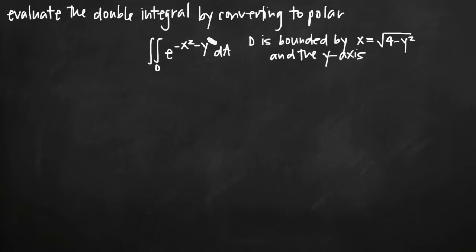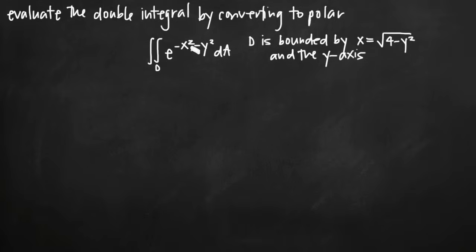The first is the function itself, e to the negative x squared minus y squared — we're going to need to change that to polar coordinates. We're going to need to change dA to polar coordinates, and we're going to need to give limits of integration in terms of polar coordinates, meaning limits of integration for r and for theta. We're converting everything in terms of x and y to things in terms of r and theta.